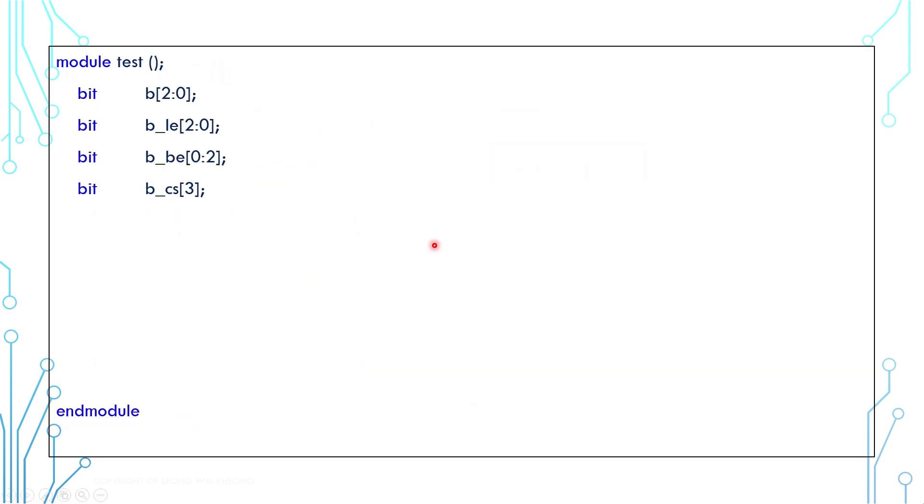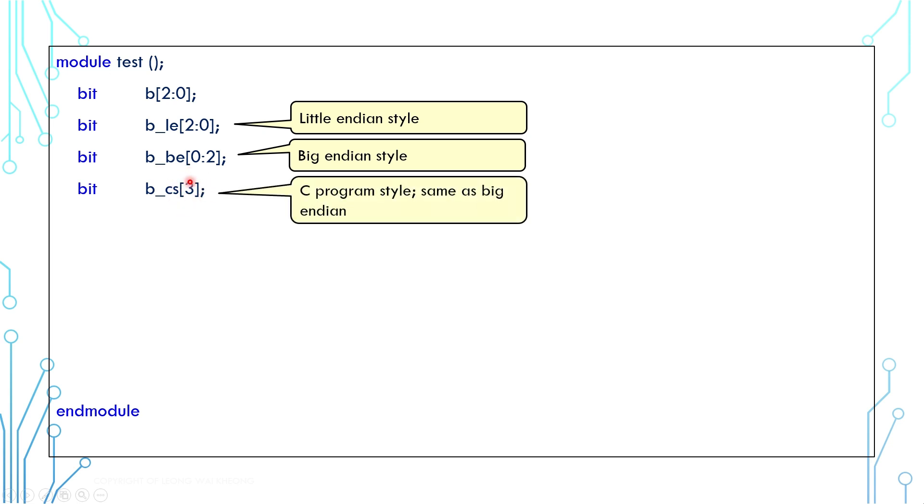An array can also be of little endian or big endian. This is little endian style, and it is pretty common. You can reverse the order of the index and create a big endian array. You can also create an array by simply providing a size number instead of a range. This is how C programming does it, and it is the same as a big endian style.